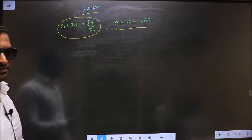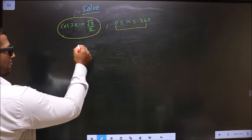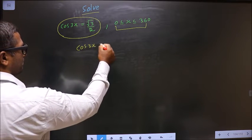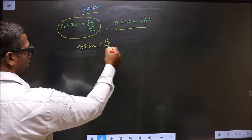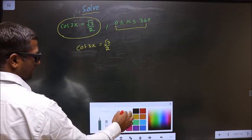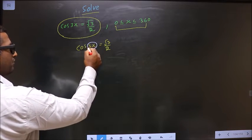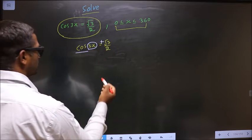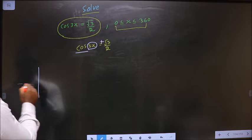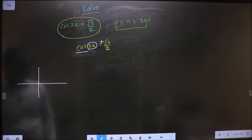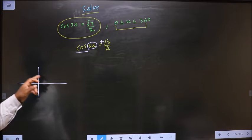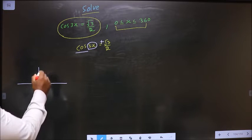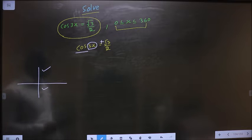First given equation is cos 3x equal to root 3 by 2. Now to get the values for 3x here you have cos and here it is positive. So in what all quadrants is cos positive? It is all silver tea cups. Cos is positive in the first and in the fourth.